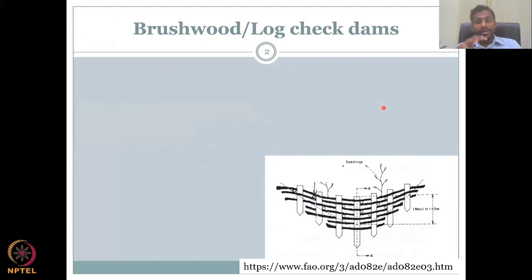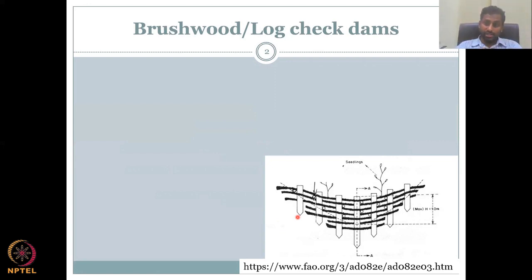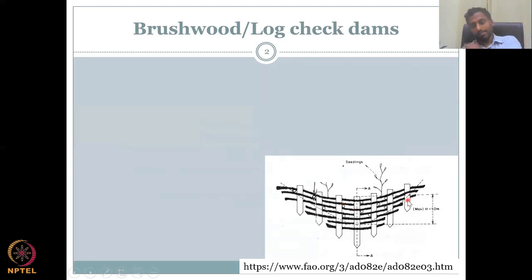In the previous example, we looked at check dams based on rocks, soil, and some saplings. In today's lecture, we will discuss brushwood log check dams, wherein wood is pushed into the ground — unlike cement and concrete structures. Here, you push these logs inside and have seedlings and saplings going across the lateral position of the check dam.